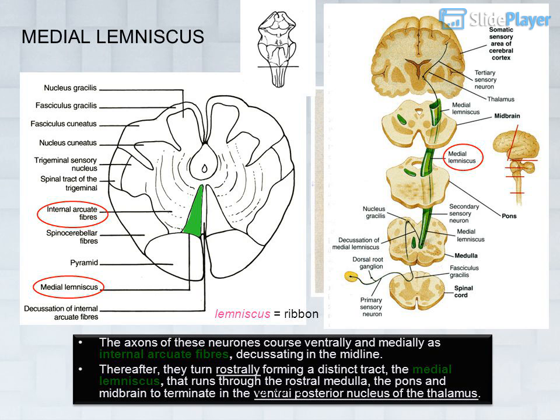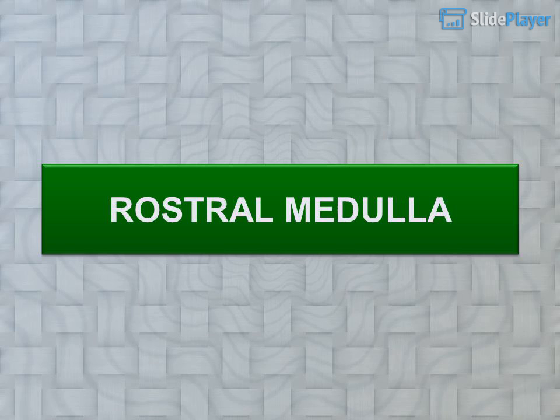These first-order neurons terminate in the nucleus gracilis and cuneatus upon the cell bodies of second-order neurons. The axons of these neurons course ventrally and medially as internal arcuate fibers, decussating in the midline. Thereafter they turn rostrally, forming the medial lemniscus — a distinct tract running through the rostral medulla, pons, and midbrain to terminate in the ventral posterior nucleus of the thalamus.